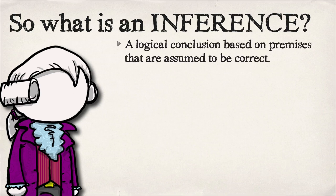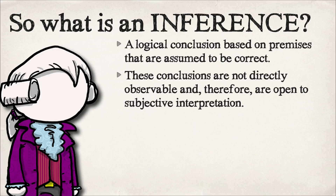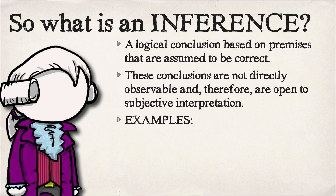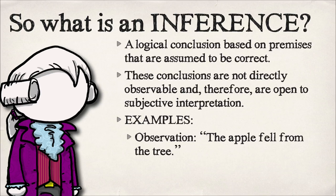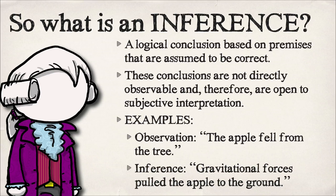An inference, on the other hand, is what many people call an indirect observation — the idea that you're making a conclusion based off premises that are assumed to be correct. These are not directly observable and therefore open to subjective interpretation; they have values added to them. For instance, an observation might be that an apple fell from a tree, while the inference would be that gravitational forces attracted the apple to the ground, or that invisible fairies occasionally pull apples from a tree and take them down to the ground.